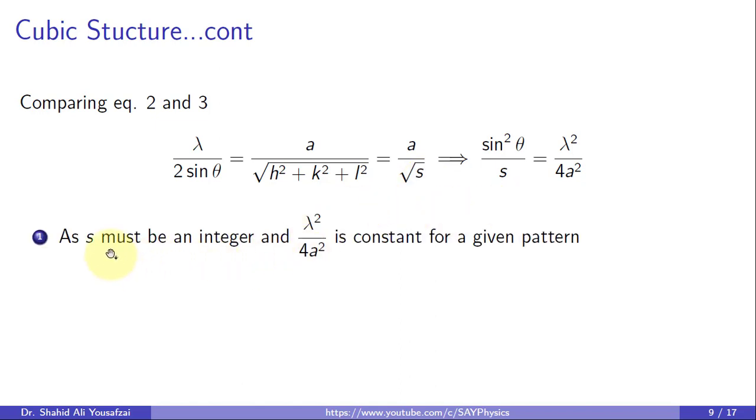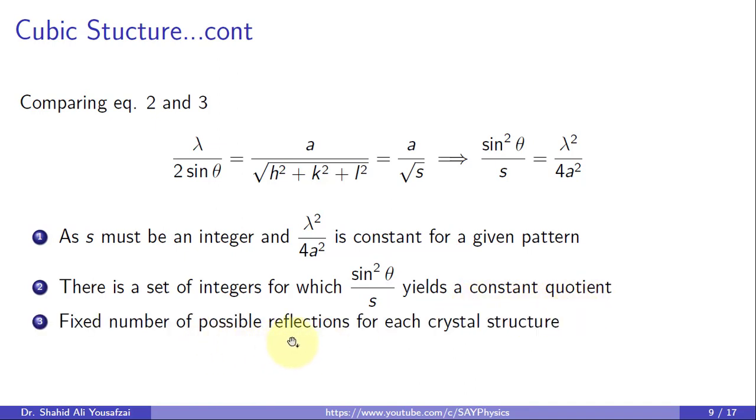As s is required to be a whole number, that is an integer, it assumes a fixed value for a particular pattern. There exists a set of integers for which sin²θ / s yields almost a constant value. Each crystal structure has a fixed number of possible reflections.